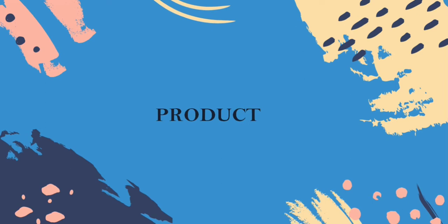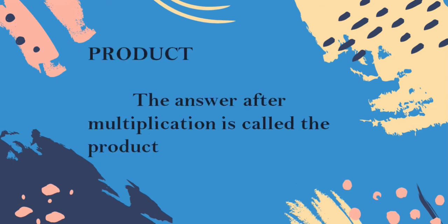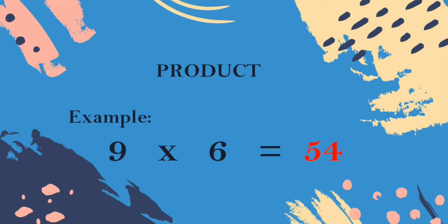Next concept we are going to see is product. Product means the answer after multiplication is called the product. Example: 9 6s are the factors. 9 6s = 54. 54 is the product. All of them understood, children? The answer you get from the multiplication is called the product.